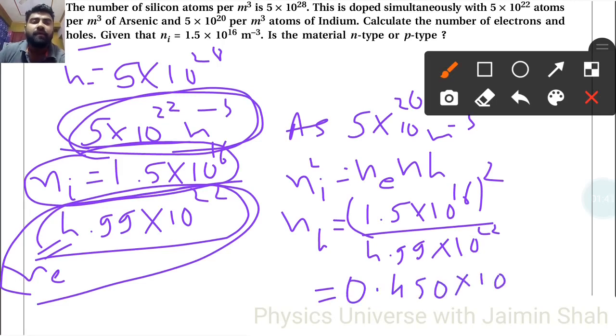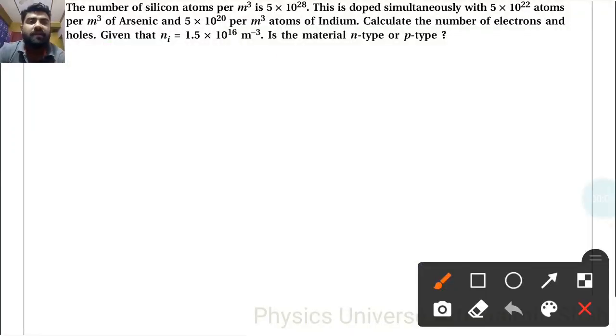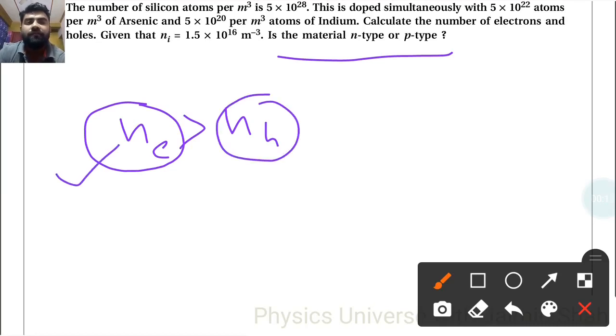That is our nh. Is the material n or p type? ne is greater than nh, so majority charge carriers are electrons. That is majority and this is minority. If majority charge carriers are electrons, it's called n-type semiconductor.